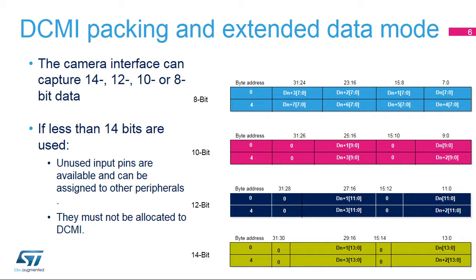The DCMI also has a hardware feature allowing us to select one byte out of two or one byte out of four. This feature is used to convert a color image to black and white and for the reduction of the image size. In the latter case, in order to keep the form factor of the image, the DCMI may only store every other line, reducing the vertical resolution by a factor of two.